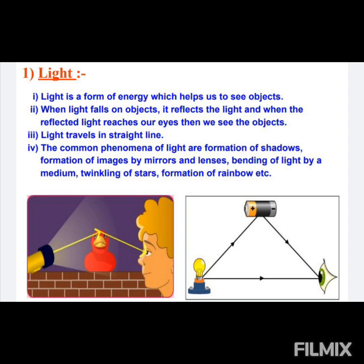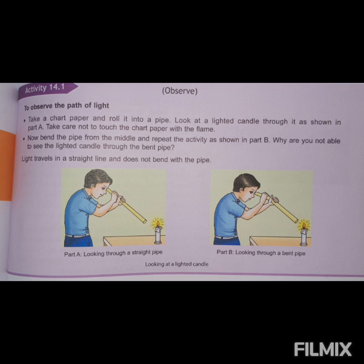This property of light traveling in a straight line is called rectilinear propagation of light, which means it is traveling in a straight line.